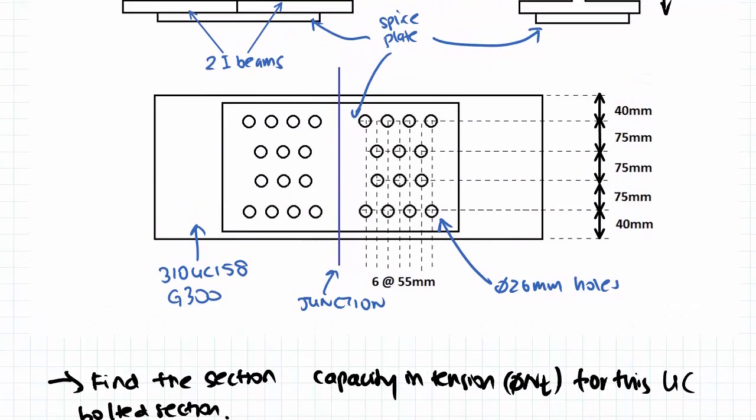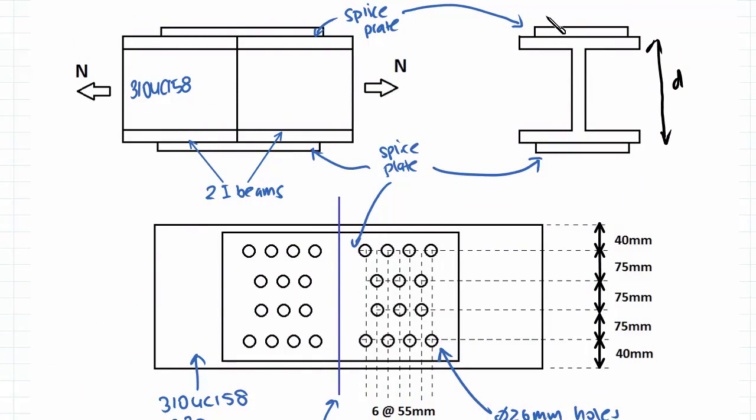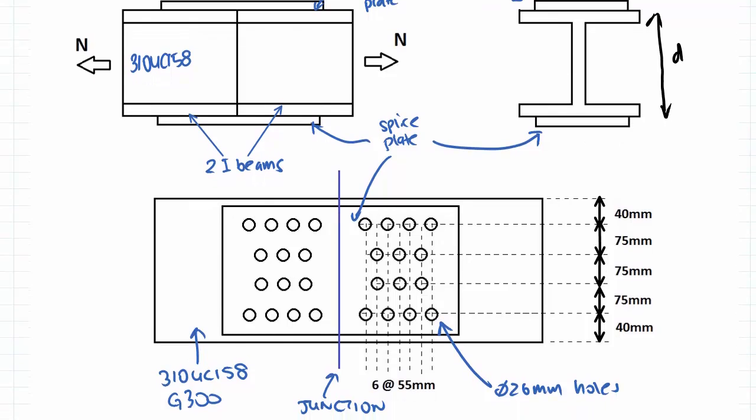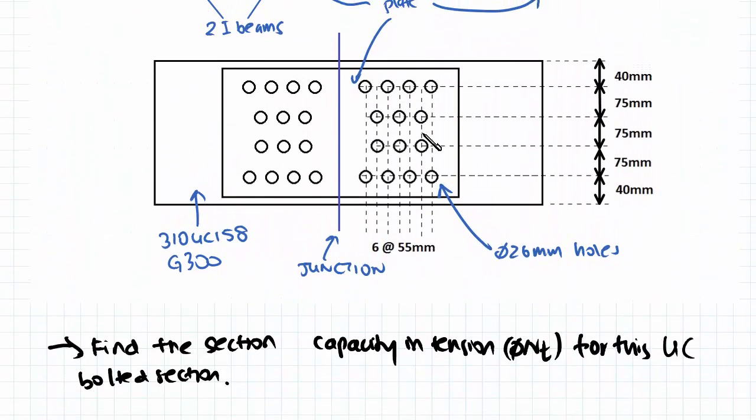So what we need to prove in order to use kT equals 0.85: firstly is that it's an I-section connected by only its flanges, as it is here, so that's checked. But we also need to check that the distance between the first row and the last row of connections is greater than the depth of the member itself, so our I-beam. Okay, so the depth of our I-beam can be found here - the depth of section is 327, and the distance between...